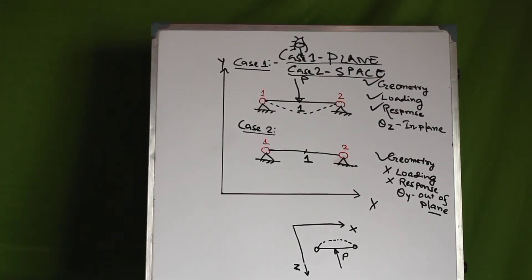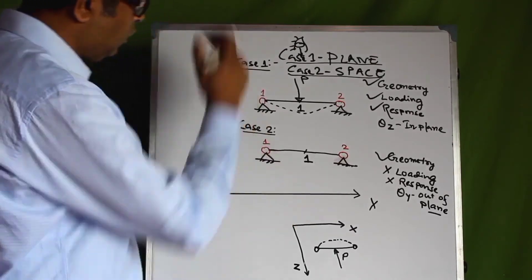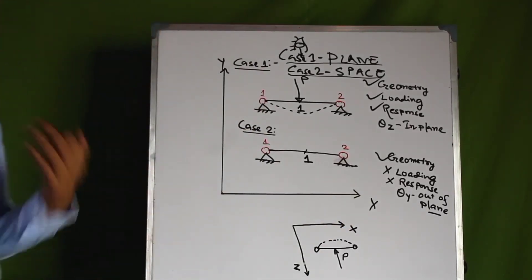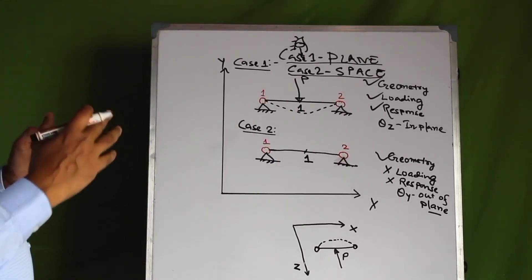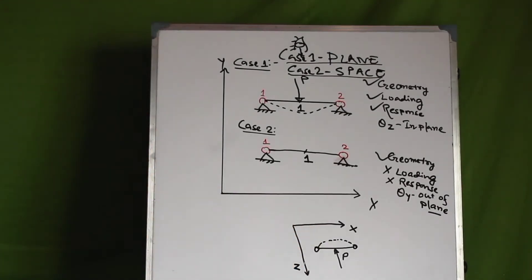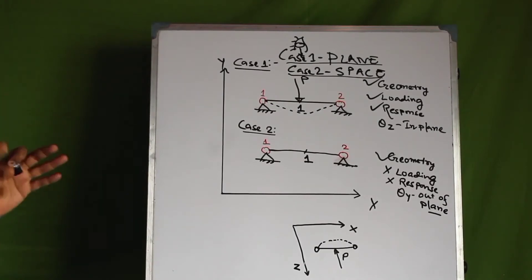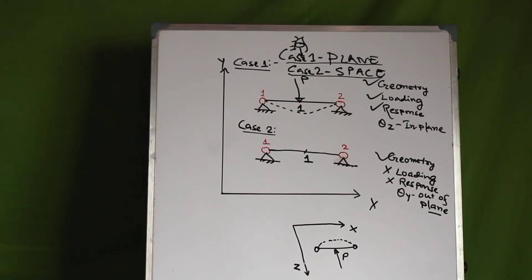From the structural mechanics point of view, this is an in-plane situation — we can describe the geometry, loading, and response in the same plane, though it is not the x-y plane but the x-z plane. So why are we calling the structure a space structure? Remember that in STAAD's terminology, an in-plane situation is only when you can draw the geometry, loading, and response in a single x-y plane. A situation that is in-plane in any other plane like the x-z plane or the y-z plane would be considered out-of-plane, and in those situations we have to consider it as a space structure.